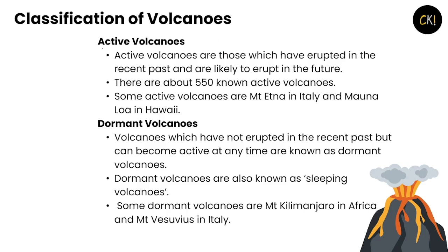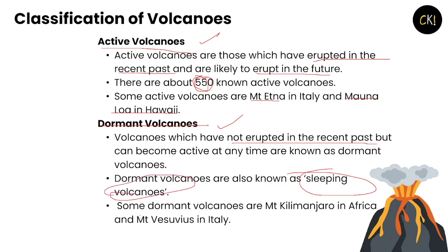Classifications of volcanoes: Active volcanoes are those which have erupted in the recent past and are likely to erupt in the future. There are about 550 known active volcanoes. Some examples are Mount Etna in Italy and Mauna Loa in Hawaii. Dormant volcanoes, also called sleeping volcanoes, have not erupted in recent past but can erupt at any time. Examples include Mount Kilimanjaro in Africa and Mount Vesuvius in Italy.